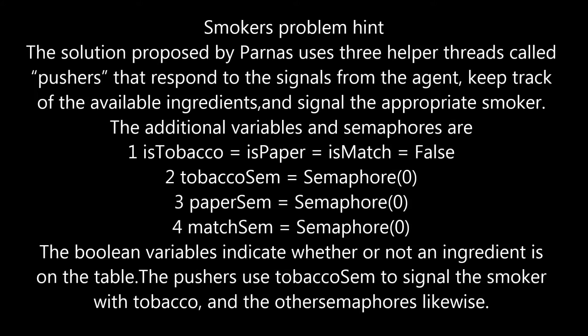Smoker's problem hint: the solution proposed by Parnas uses three helper threads called pushers that respond to signals from the agent, keep track of available ingredients, and signal the appropriate smoker. The boolean variables indicate whether or not an ingredient is on the table.